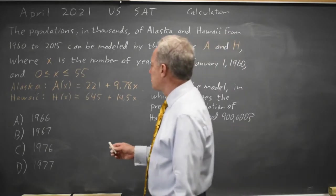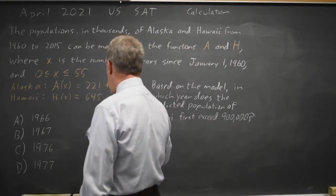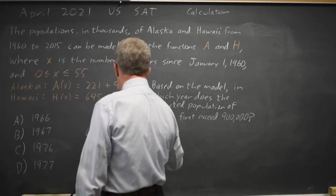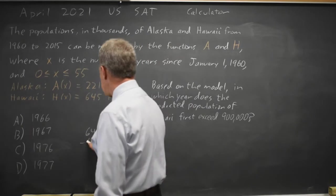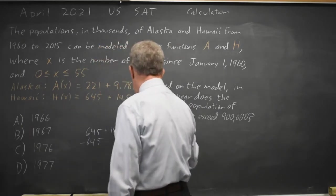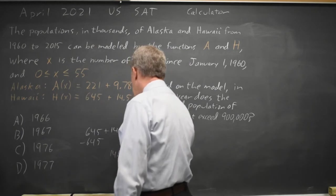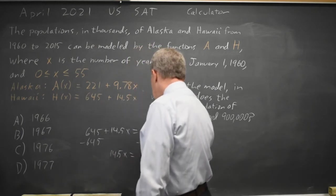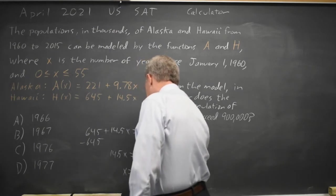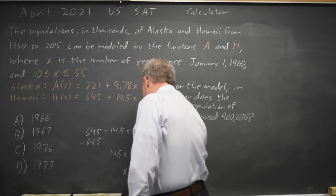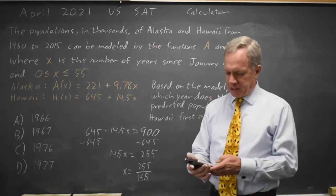We can do this algebraically. We get 645 plus 14.5x equals 900, remembering that these are in thousands, subtract 645 and we get 14.5x equals 255 or x equals 255 over 14.5 which we could do by hand but why would we?